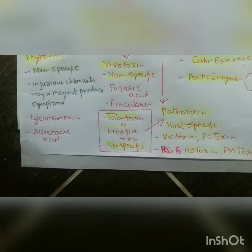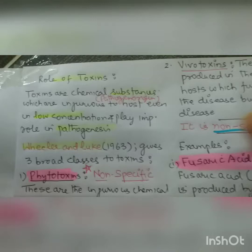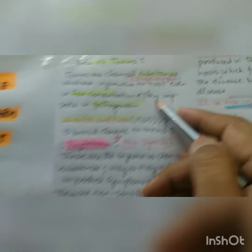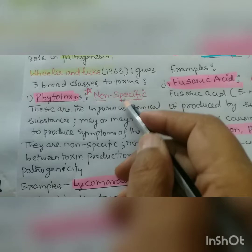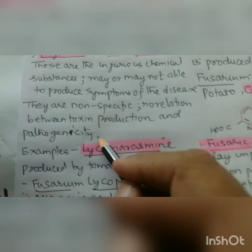Now I am starting the role of toxins. Toxins are chemical substances which are injurious to the host even in low concentration and play an important role in pathogenesis. According to Wheeler and Luke (1963), toxins are classified into three broad classes. First is phytotoxins — they are non-specific, injurious chemical substances that may or may not produce symptoms; there is no relation between toxin production and pathogenesis.